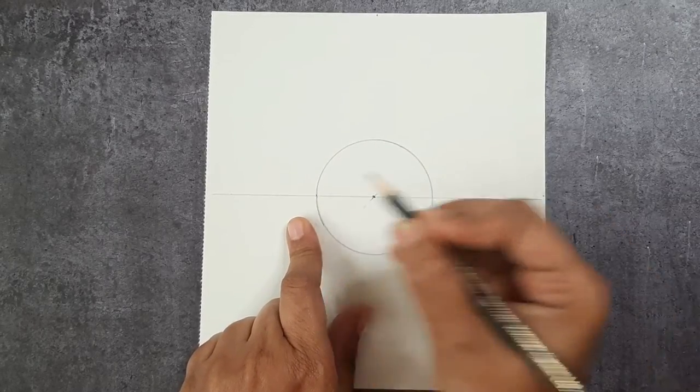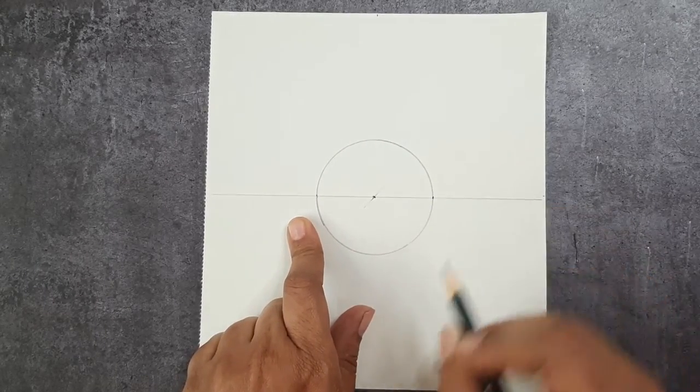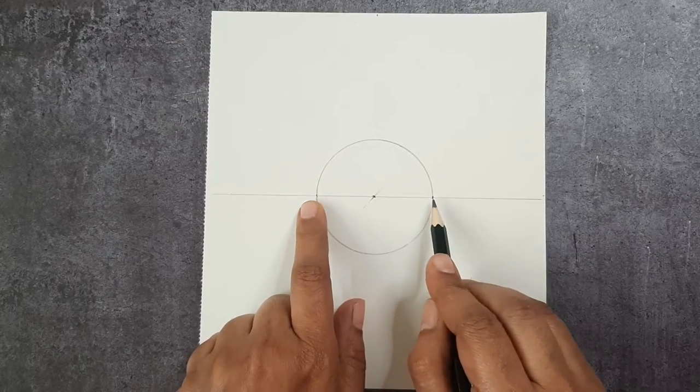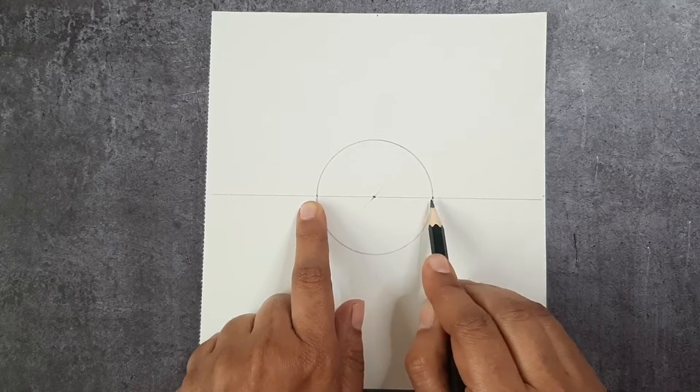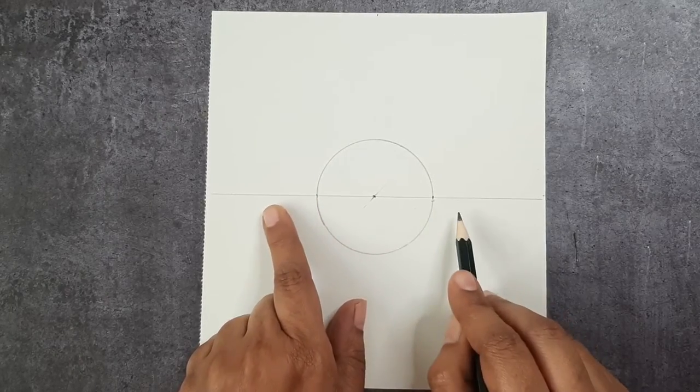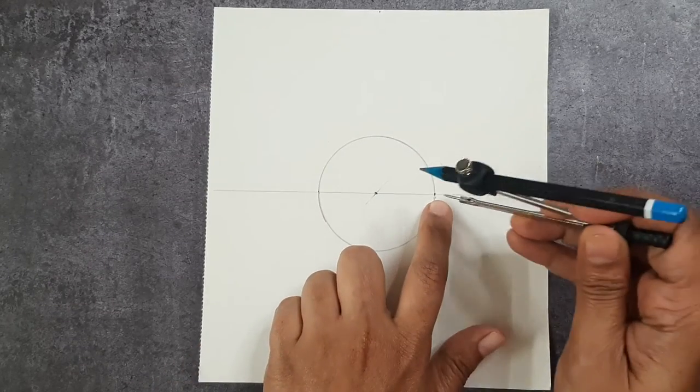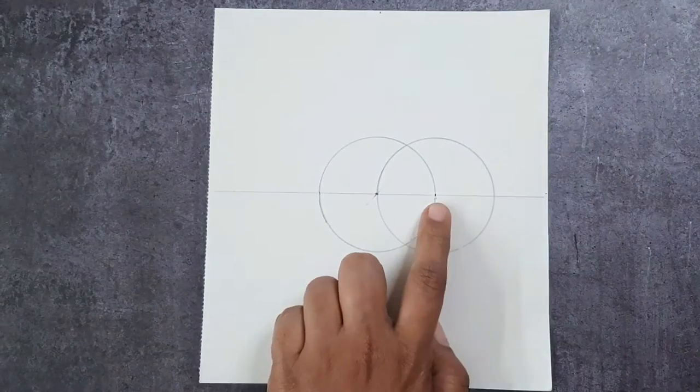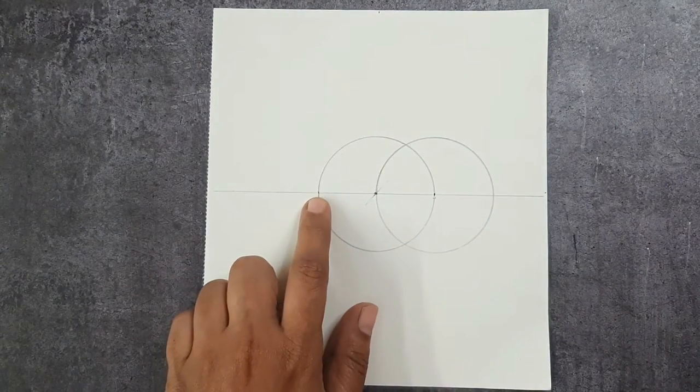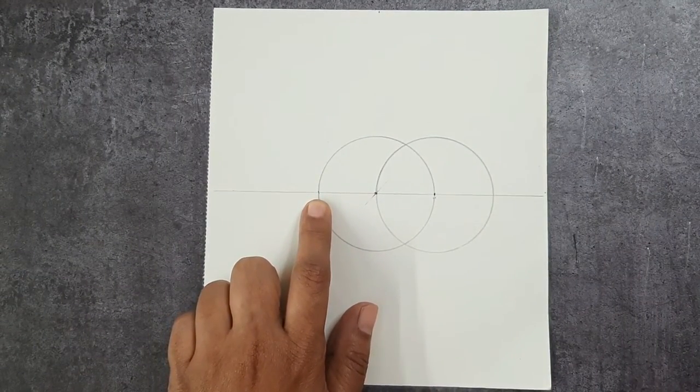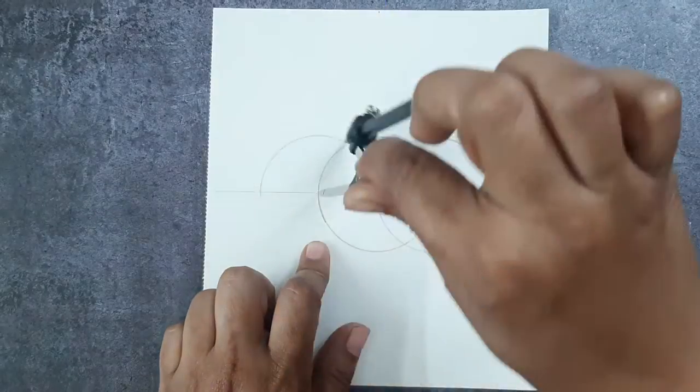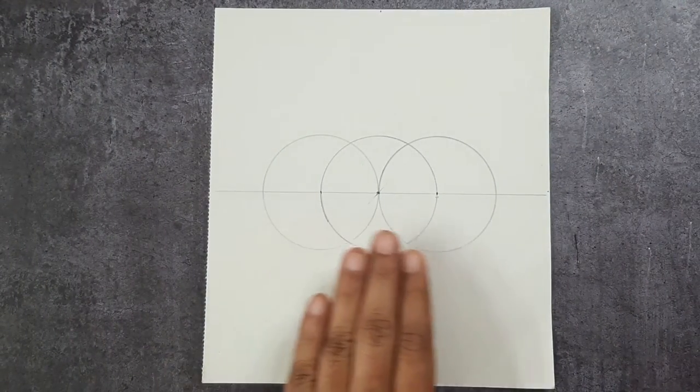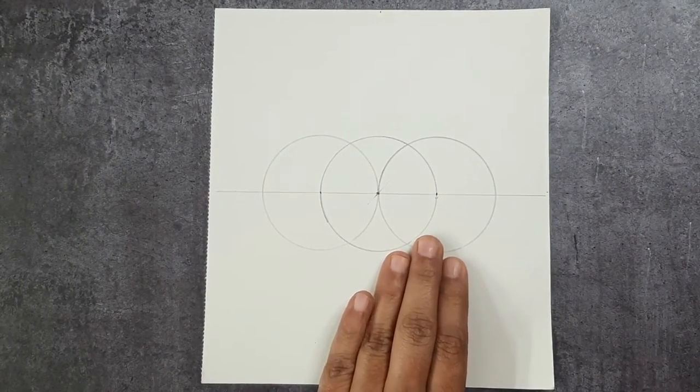Now keeping these two intersection points as center, I'm going to draw two more circles. I'll keep this as a center. The first circle is done. Now keeping this point as a center I'll draw another. The first part of seed of life is done. These three circles intersect at four different points.